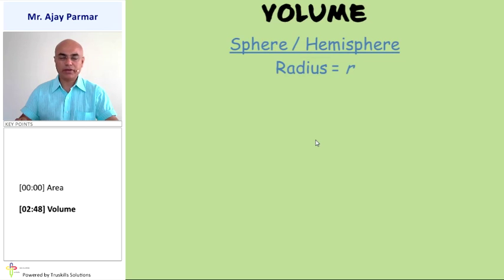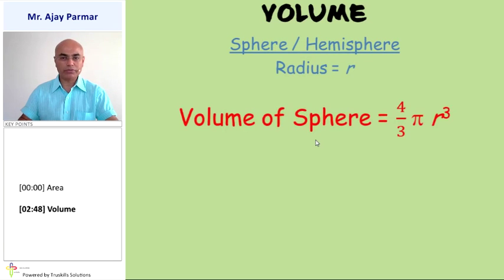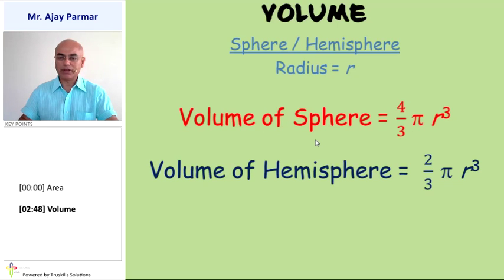For a sphere or a hemisphere, if the radius is represented by R, then volume of the sphere will be four-third pi R cube. Whereas that of the hemisphere will be obviously half of that, will be two-third pi R cube.